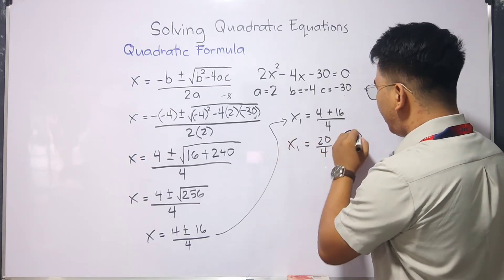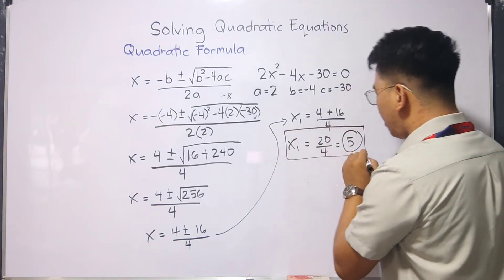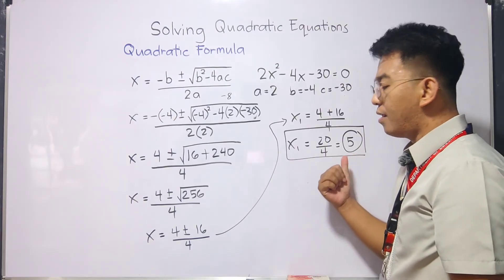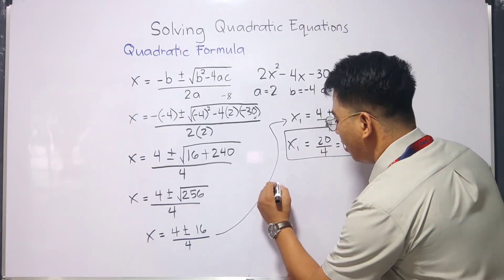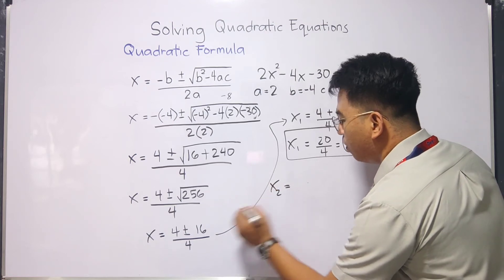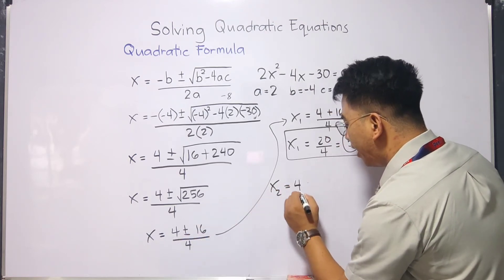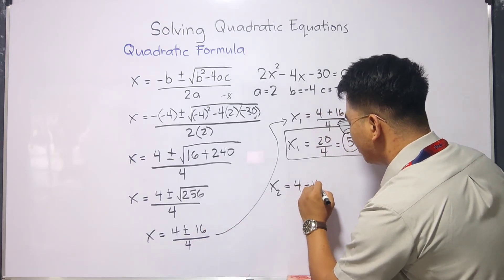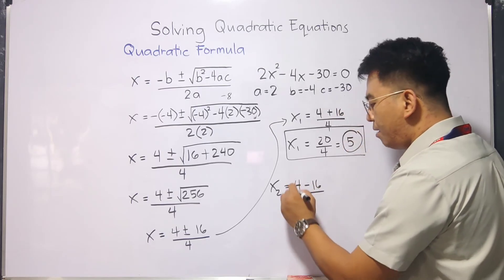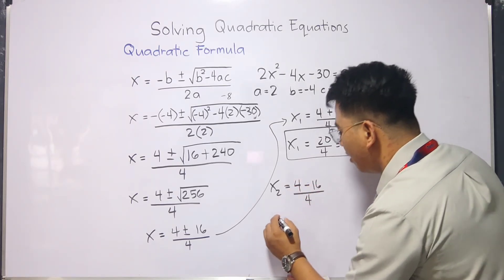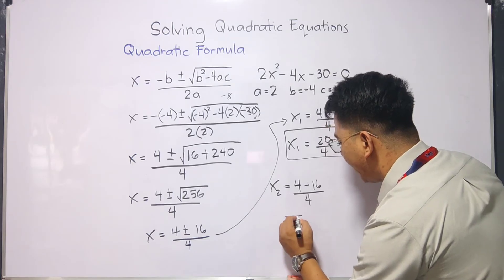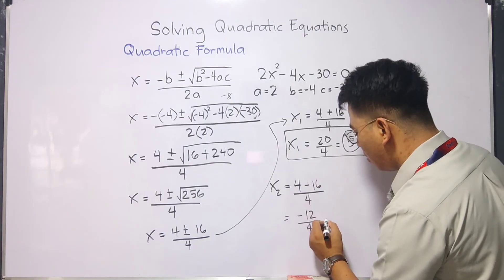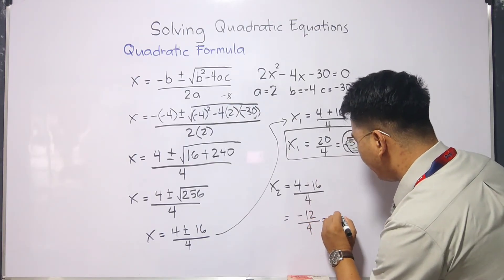And as you can see, this is the first solution of the given equation. The value of x is 5. Now let's go with the x sub 2, or the second root. For the x sub 2, you have 4. And we are done using the positive 16, or plus 16. Now it's minus 16, over 4. Simplify. 4 minus 16, you have your negative 12 over 4. Then divide this. Negative 12 divided by 4 is negative 3.